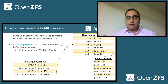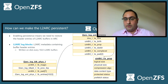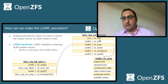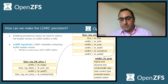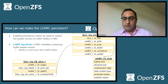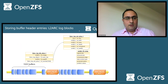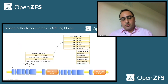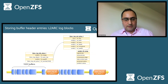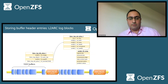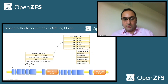A log block is written on the L2ARC every 1022 buffers. We can see that it contains things like DVA, the transaction birth, the size of the buffer, compression algorithms, whether it was encrypted, or its data content type. This is a subset of the ARC header that we restore when we do the rebuild of the L2ARC. This is how it looks on disk: we have 1022 buffers followed by a log block, which contains the buffer header entries of the previous 1022 buffers, and this repeats over and over again.